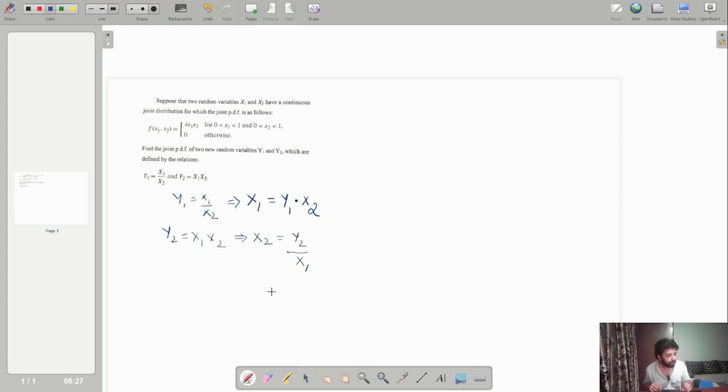I can substitute the x1 which I calculated, so I can write x2 equals y1 multiplied by x2. Now I can say this is x2 squared equals y2 by y1, which can be written as x2 equals square root of y2 by y1.